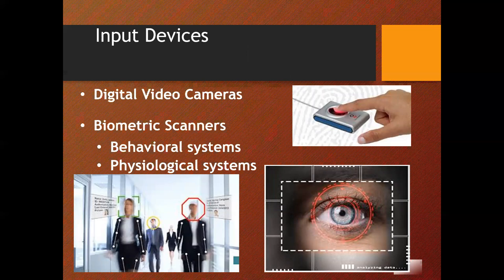Another type of input device is digital video cameras. Digital video input includes digital cameras, camcorders, webcams, and similar devices. Although many people only use such devices in recreational settings, accountants also use them for documenting inventories, checking damages to vehicles or offices due to an accident, and identifying new or existing employees for security purposes.